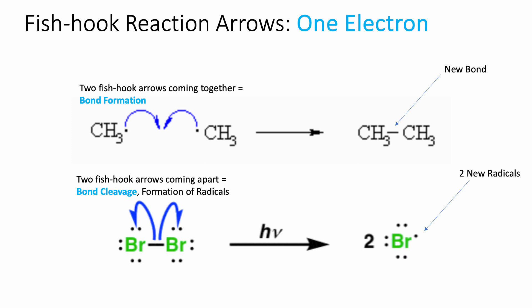We only use fishhook arrows when looking at radical mechanisms. Radical mechanisms are not particularly common in organic chemistry, so this is an uncommon case. We will see an example in this chapter, but as we go on, we will more often use full arrows. It's important to recognize that we only use fishhook arrows when talking about a radical mechanism.